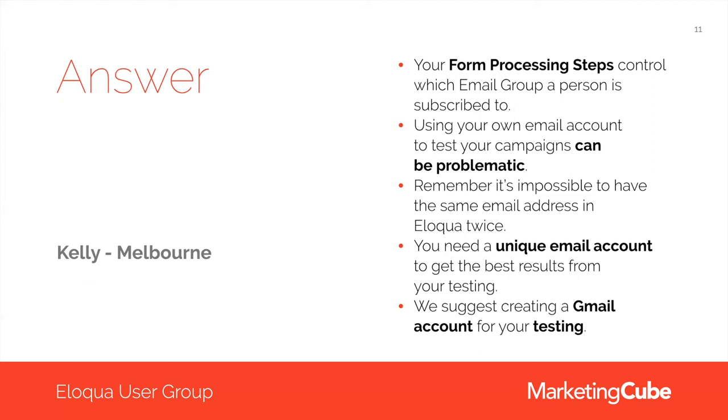Using your own email address again and again can be problematic because it's impossible to repeat an email address in Eloqua — they must be unique within the platform. So we need a way to create a unique email address without creating lots of free Gmail, Hotmail, or Yahoo accounts. The solution is to create a Gmail account — probably not your own personal one — maybe your company name at gmail.com. That gives you an inbox you can use for testing.